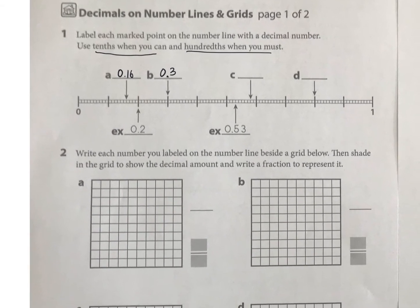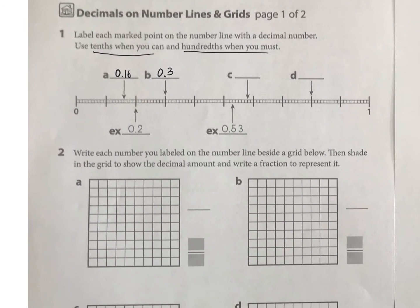And then you're going to move these same things into a grid. So 16 hundredths you can write there, and then you would fill in that much of your grid.